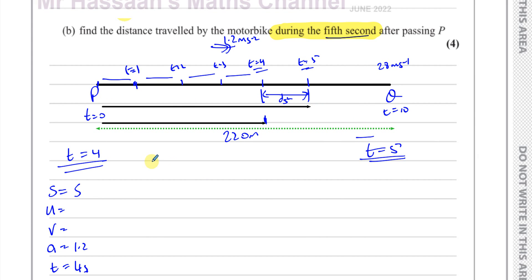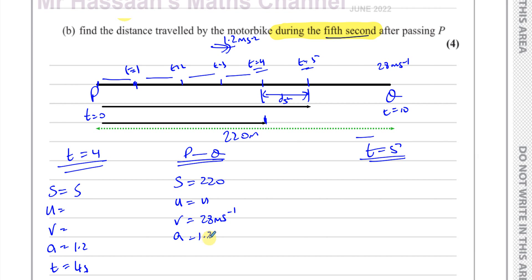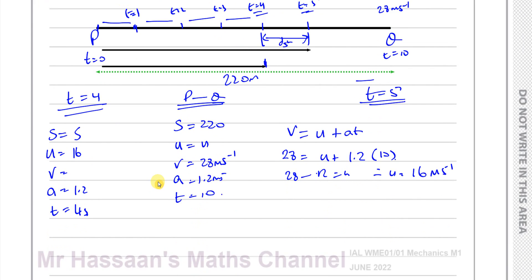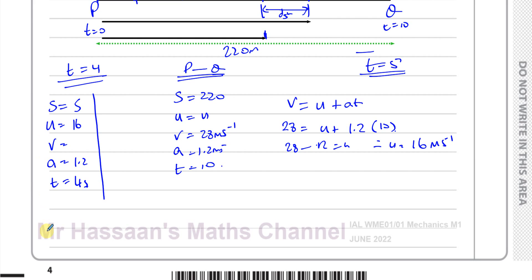We need to find the initial speed from the information we have, because we know the acceleration, the final speed, and the time from P to Q. Considering P to Q: S = 220, V = 28, A = 1.2, T = 10. We can use V = U + AT, so 28 = U + 1.2 × 10. That gives U = 28 − 12 = 16 meters per second.